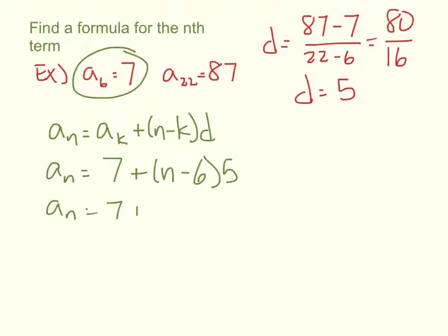So aₙ equals 7 plus 5n minus 30. So the formula for the nth term is 5n minus 23.